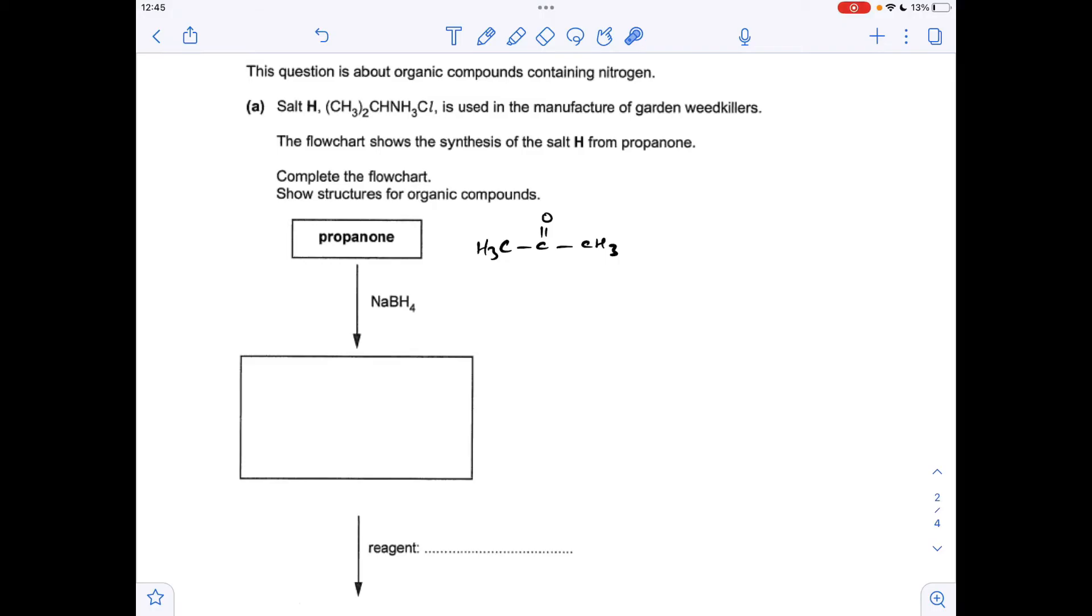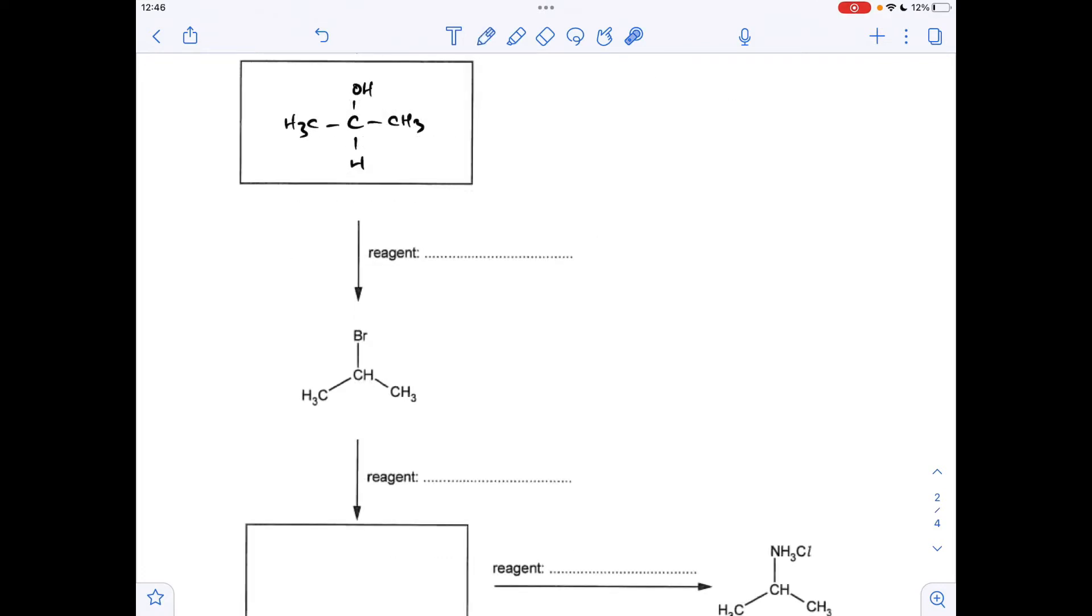Moving on to the next question now. Again testing our knowledge of organic reactions and reagents and conditions. So propanone when it's reacted with NaBH4 it gets reduced to a secondary alcohol. That's going to generate that product there which is propane 2-ol. Moving on to the next reaction.